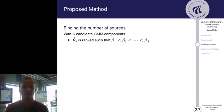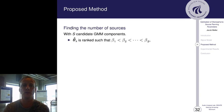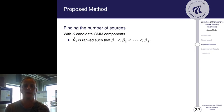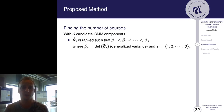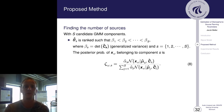We find the number of sources in the set indexed by s from 1 to capital S, and the estimated parameters theta_s is ranked such that beta_1 is smaller than beta_2 up to capital beta_S. And beta is chosen to be the generalized variance. The generalized variance is computed as determinant of the covariance matrix. And after we have ranked the parameters, we compute the posterior probability of x_w belonging to component s, which is shown in equation 8 as zeta.